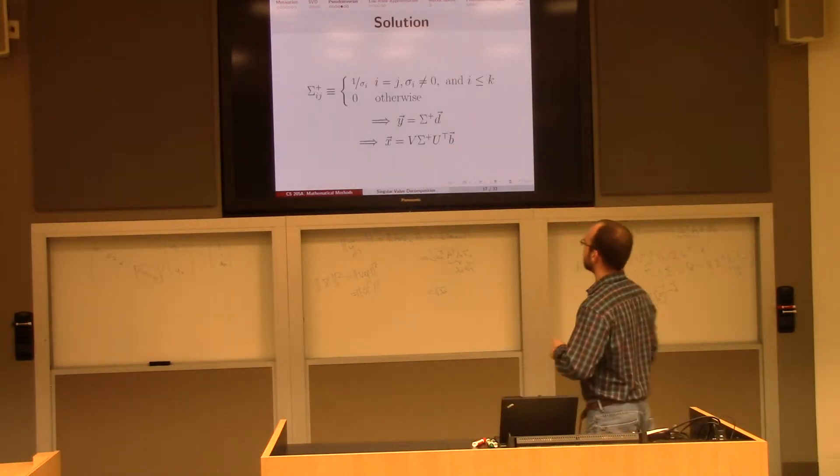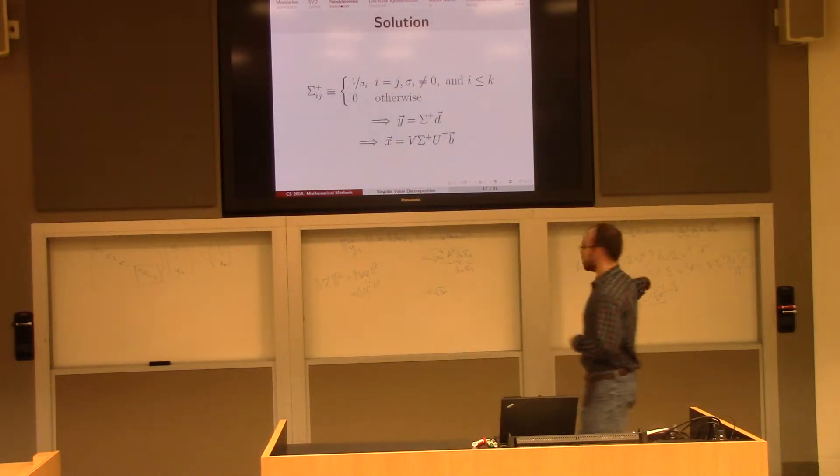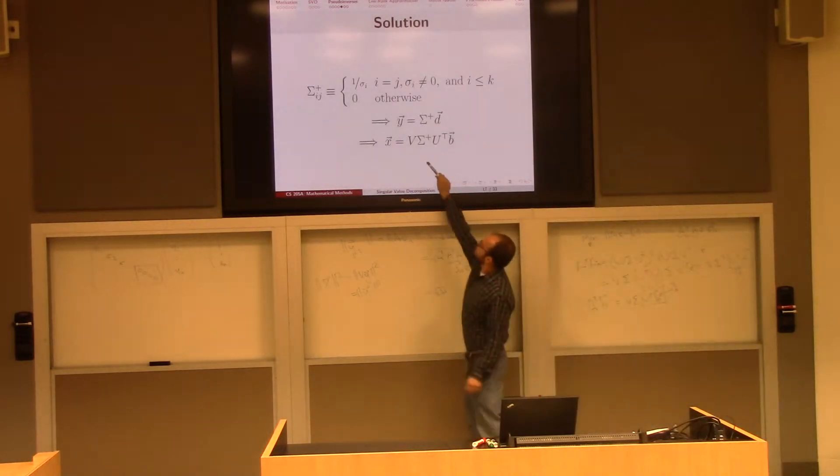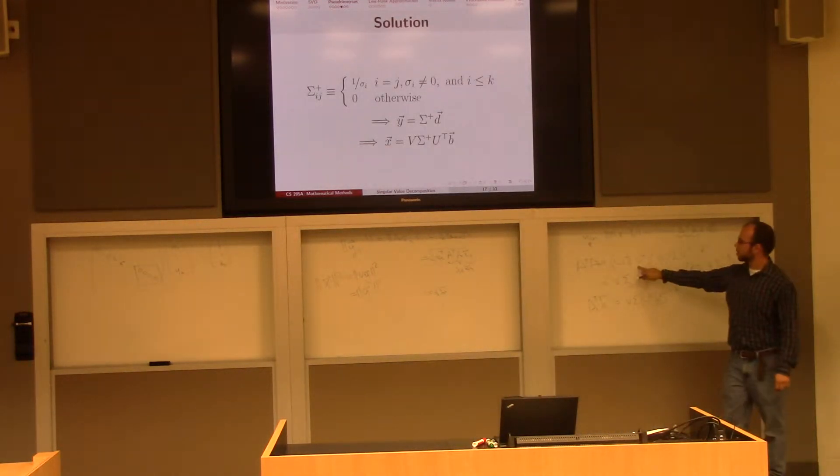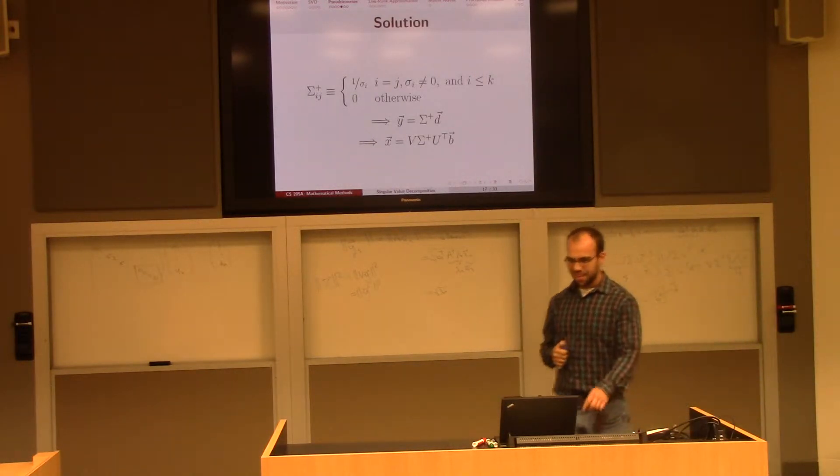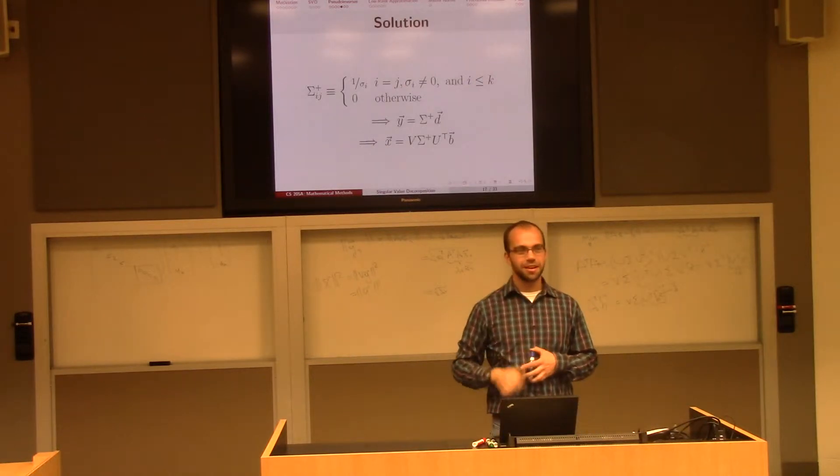And in particular then, if we go back, we put all of our substitutions back in. This tells us that x is equal to v sigma plus u transpose b. Remember that this u sigma v transpose came from factoring a. So we got all the way into the trenches and we came out with a nice formula.